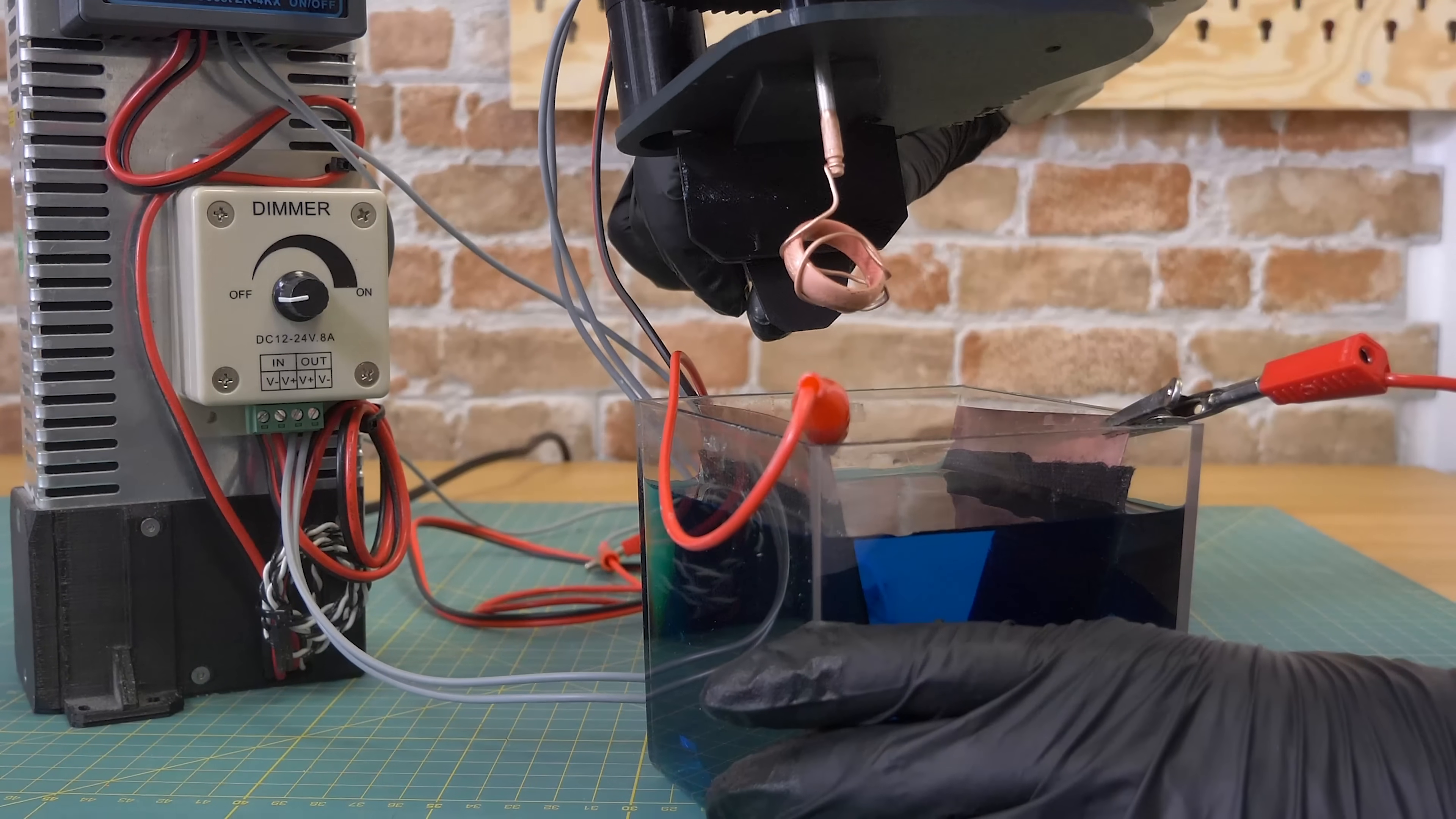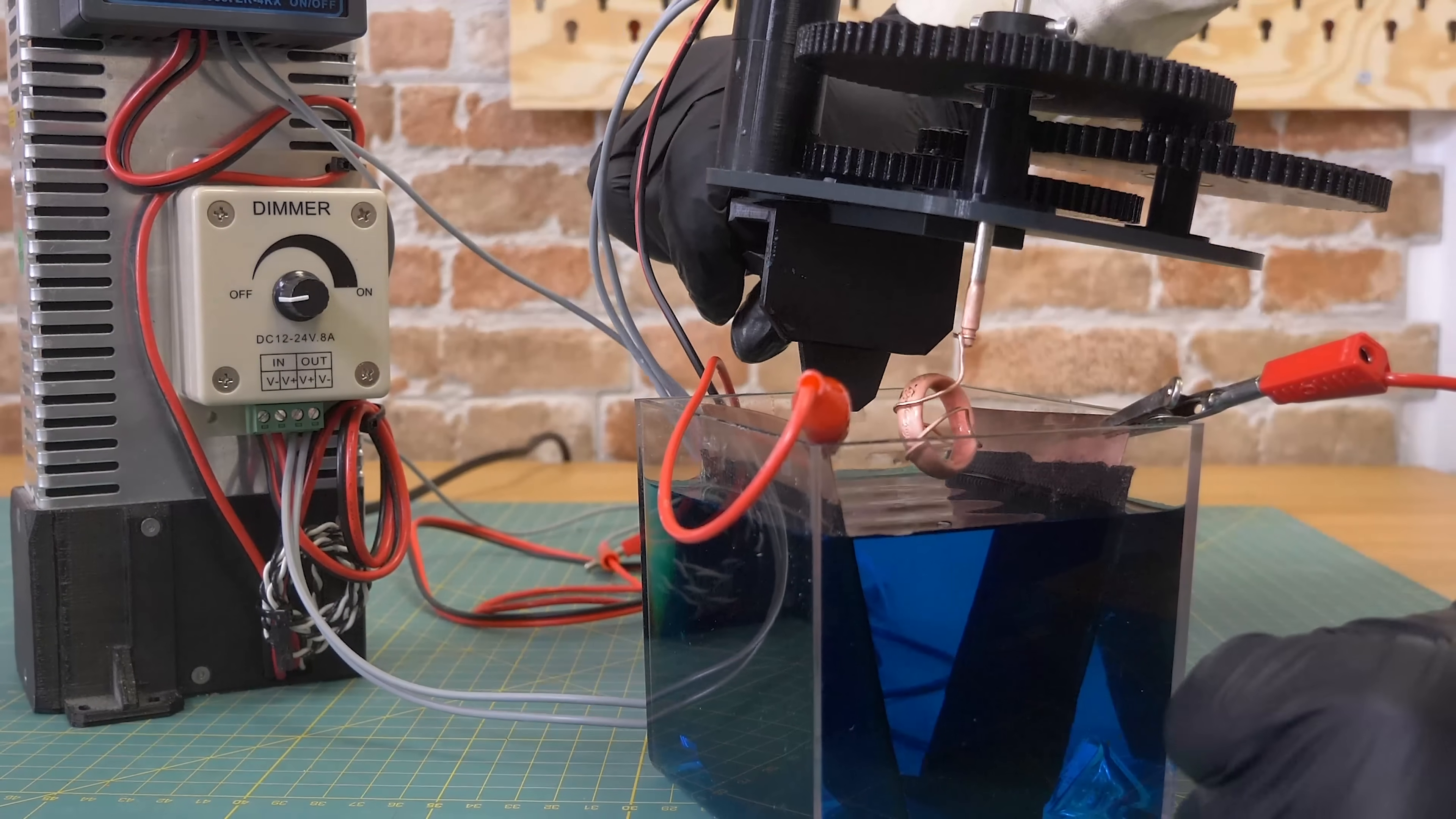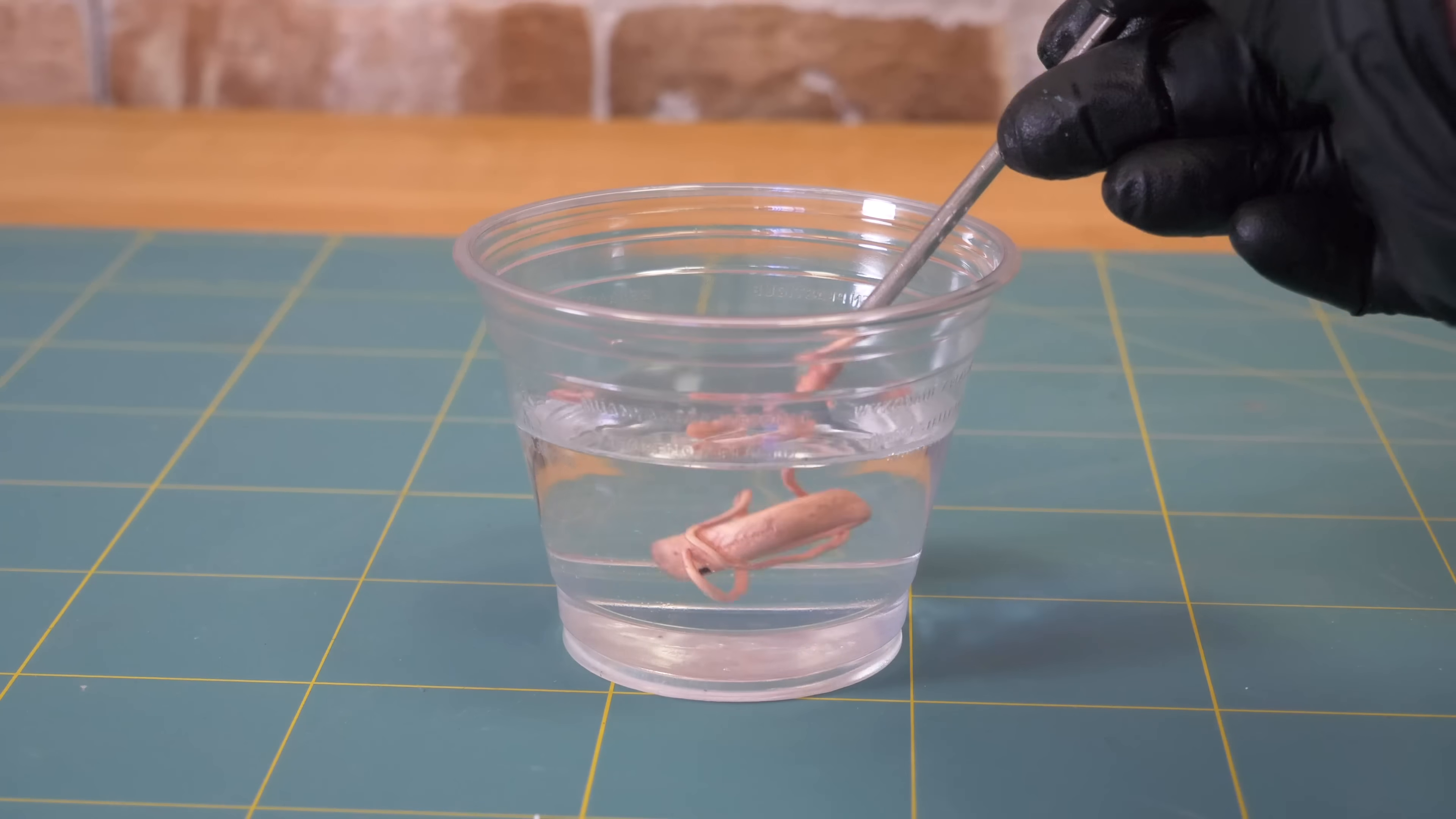Now, the model should be coated in a thick layer of copper. Don't forget to move the model from time to time to prevent it from being welded to the wire. When finished, rinse the model in distilled water.